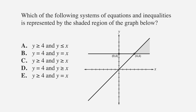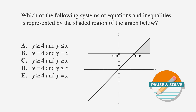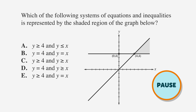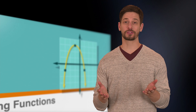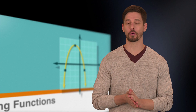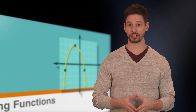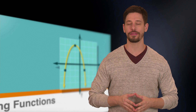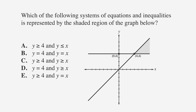Here's the question: Which of the following systems of equations and inequalities is represented by the shaded region of the graph below? The answer choices are possible systems of equations and inequalities. As we discussed earlier, every point that's a solution of an equation or inequality must appear on the graph of the function. In this case, we're looking for all of the points in the shaded region. All of the answer choices contain some form of y is greater than or equal to 4, so let's start by looking at that.